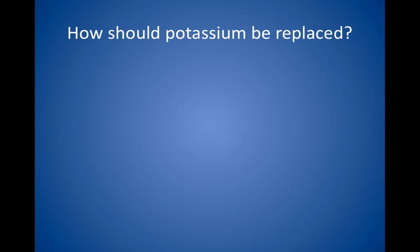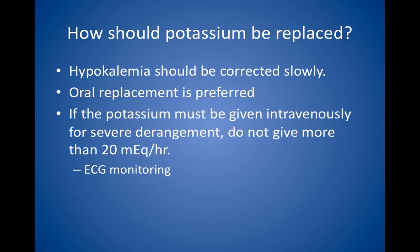How should potassium be replaced? Like all electrolyte abnormalities, hypokalemia should be corrected slowly. Oral replacement is preferred, but if potassium must be given intravenously for severe derangement, do not give more than 20 mEq per hour. Put the patient on an EKG monitor when giving IV potassium, because potentially fatal arrhythmias may develop.